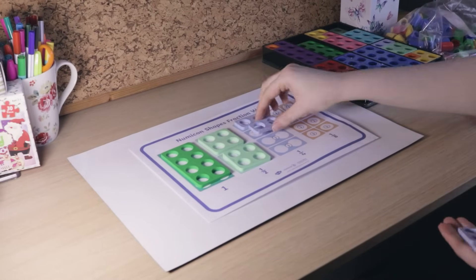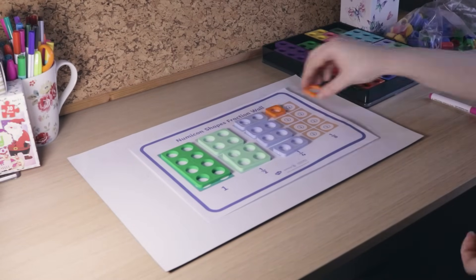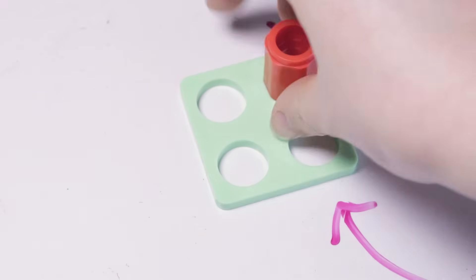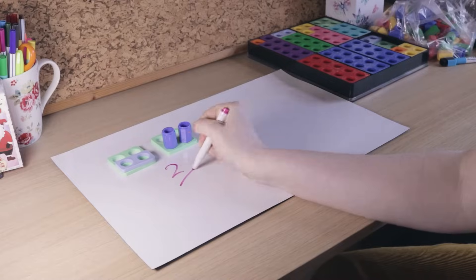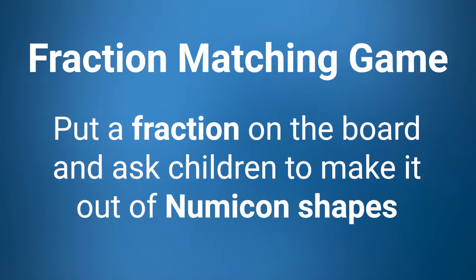To help, leave posters and playmats with fractions visualized as Numicon shapes around your classroom for learners to reference if they need help. These colored pegs are really useful for showing fractions as well, as they fit into the holes in the Numicon shapes. Fraction matching games would work great for this. Put a fraction on the board and challenge children to quickly make that fraction out of Numicon.